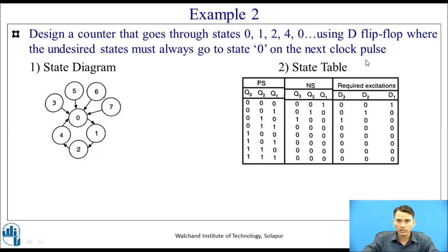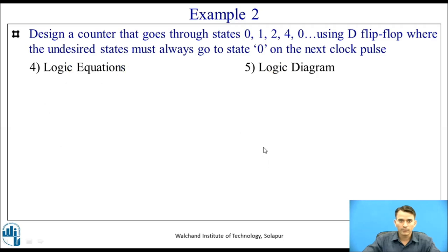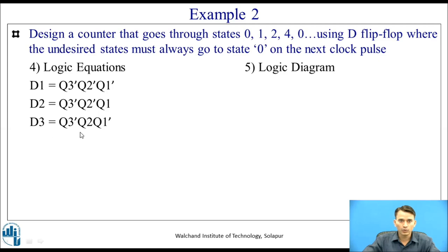Since D flip-flop is a transparent flip-flop, the excitation input is the same as the next state. From the excitation input column, we derive equations: D3 is high for input combination Q3'Q2Q1' so D3 = Q3'Q2Q1'. D2 is high for Q3'Q2'Q1, so D2 = Q3'Q2'Q1. D1 is high for Q3'Q2'Q1', so D1 = Q3'Q2'Q1'. The logic equations obtained are: D1 = Q3'Q2'Q1', D2 = Q3'Q2'Q1, D3 = Q3'Q2Q1'.